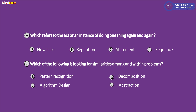Question five: which term refers to doing things again and again — that is, repeating an action in programming? The options include flowchart, repetition statement, and sequence. Option B, repetition, is the correct answer. The word repetition means to repeat work multiple times.